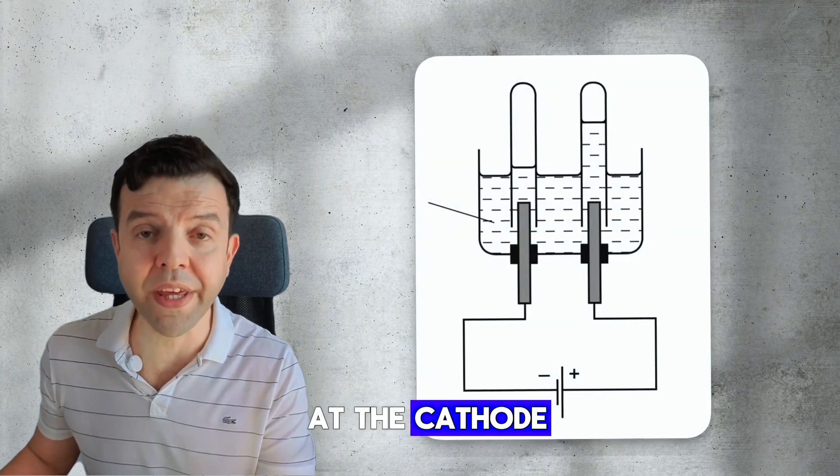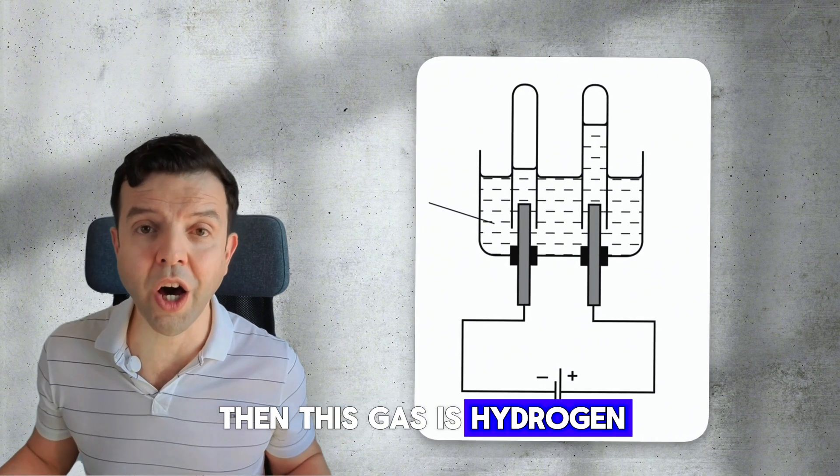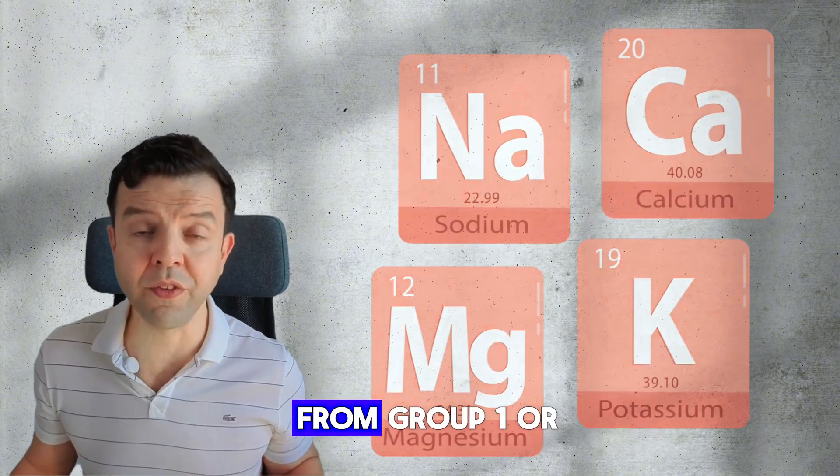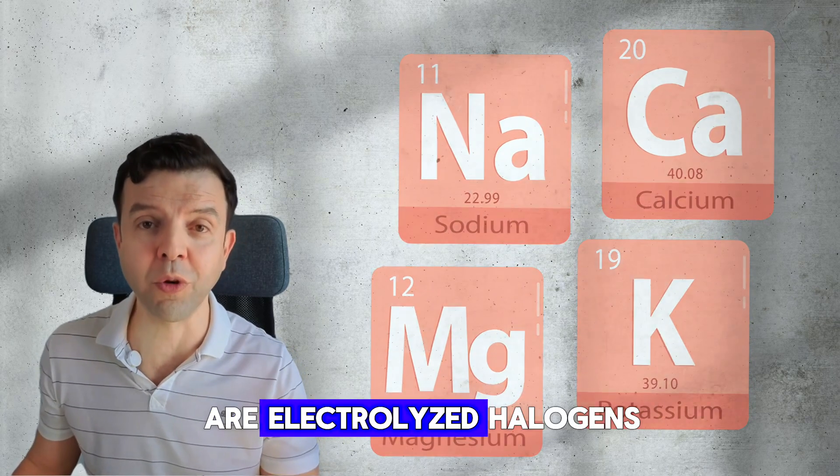If a gas appears at the cathode, then this gas is hydrogen. Hydrogen gas appears at the cathode when highly reactive metals from group 1 or group 2 are electrolyzed.